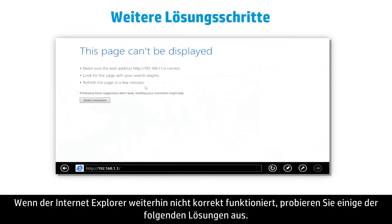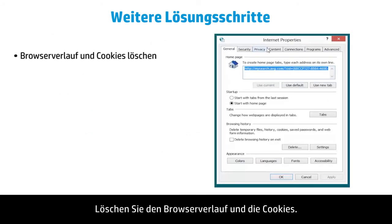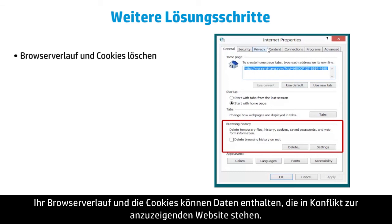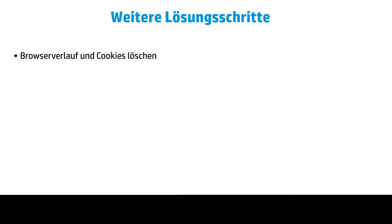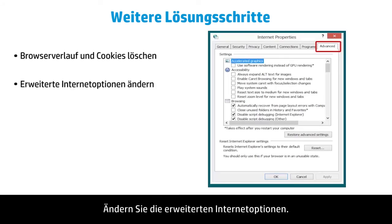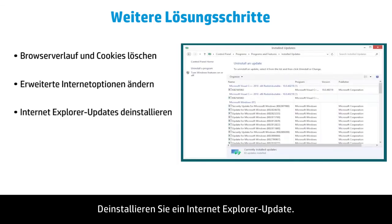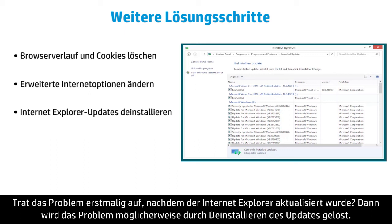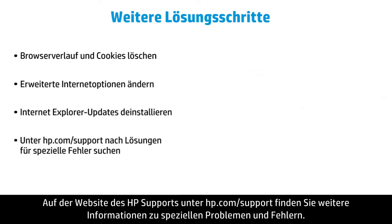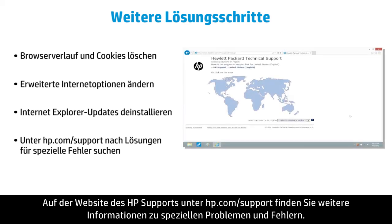If Internet Explorer is still not working properly, you might try some of these additional solutions. Try deleting your browsing history and cookies, as they may contain information that conflicts with the website you are viewing. Try changing Advanced Internet Options to change the way websites are displayed. Try uninstalling an Internet Explorer update if the problem began after an update, as uninstalling it may solve the problem. To find solutions for specific problems and errors, check the HP Support website at hp.com/support.